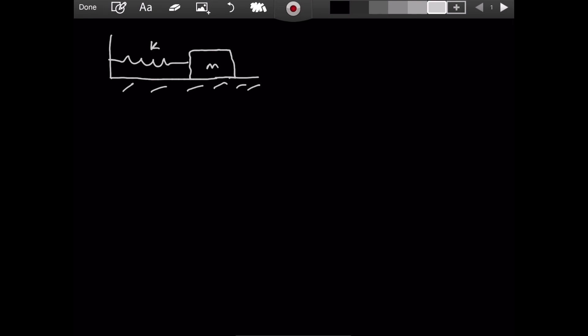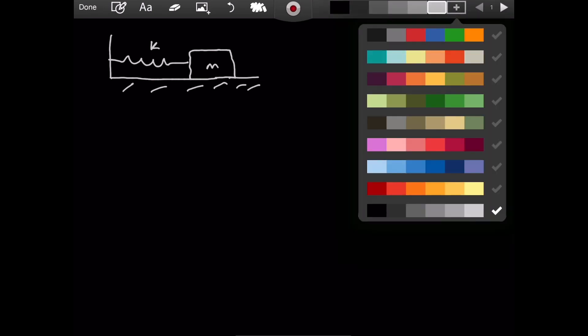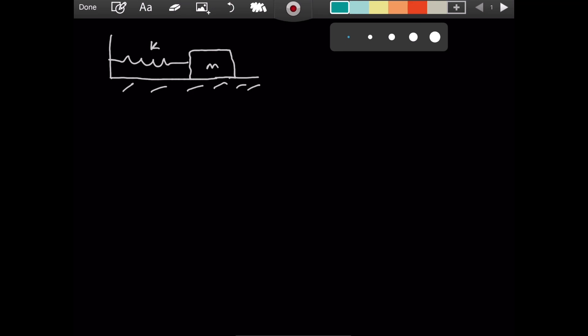Now when the spring is at its natural length, that is it isn't stretched nor compressed, we give this mass a velocity of v to the right. Now it is going to travel through a distance of 2L from its initial position.